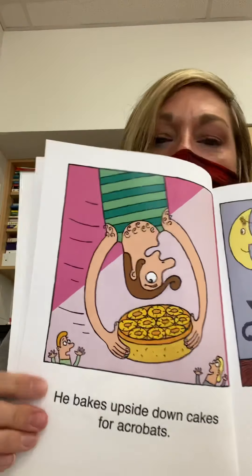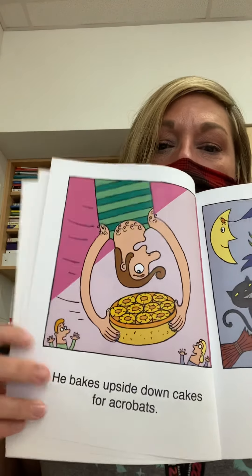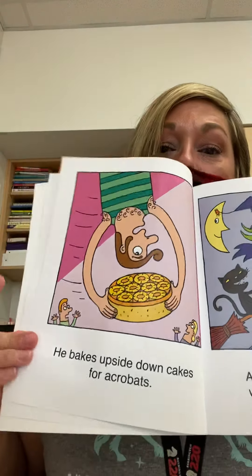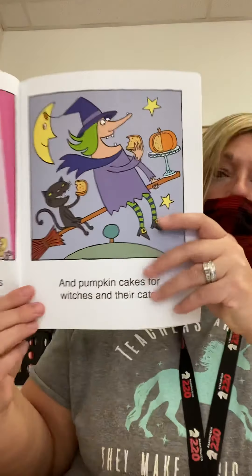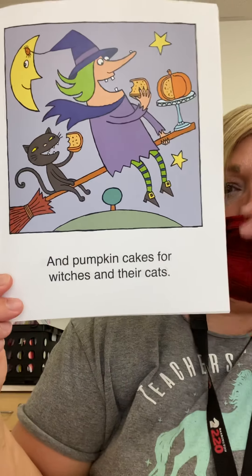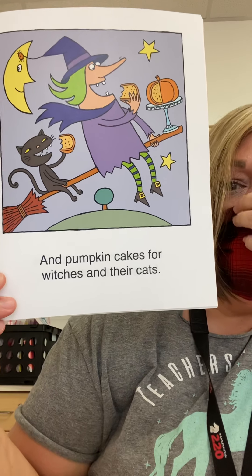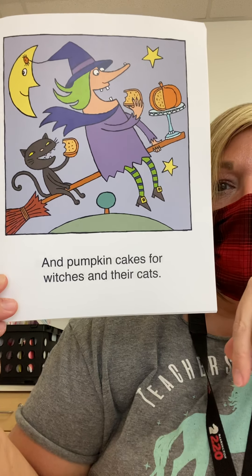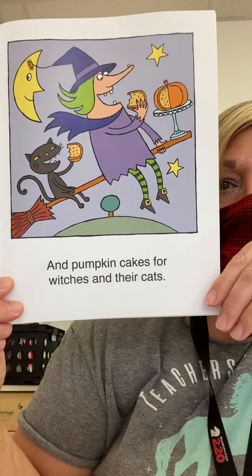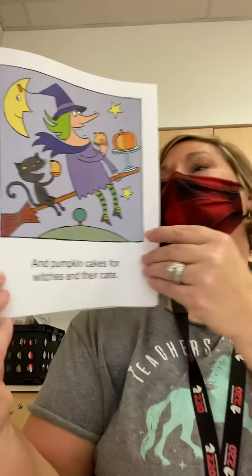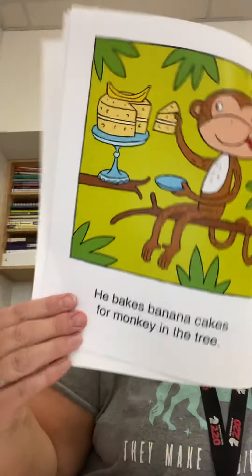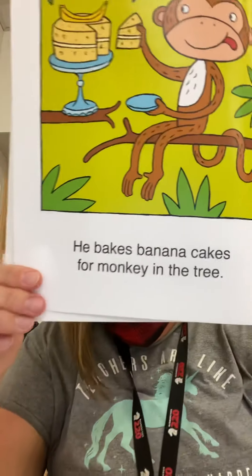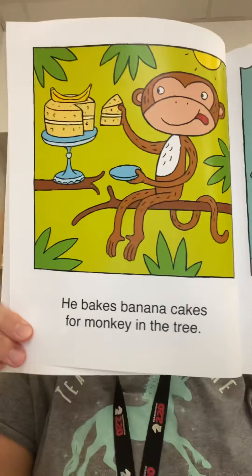He bakes upside-down cakes for acrobats and pumpkin cakes for witches and their cats. He bakes banana cakes for the monkey in the tree.